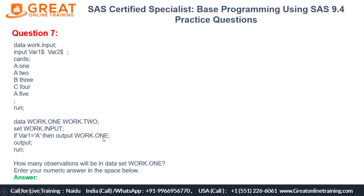Work.one is created with three observations from the first OUTPUT. But then there's a second OUTPUT statement — work.one already exists with those three observations, and now you are appending all five observations from the input dataset into it again. So total: three plus five equals eight observations.